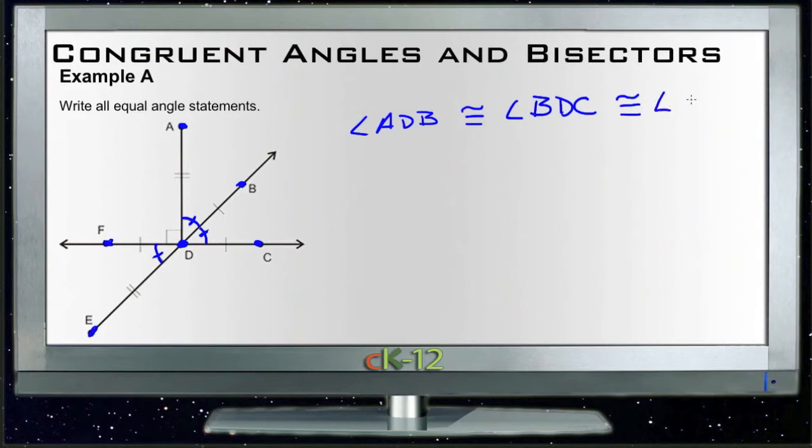Now you can also tell there's another rule we'll talk a little bit more about later, but we can also tell because FDE and BDC are across from each other, those are also called vertical angles. And there is another rule that says that vertical angles are equal, so we could also tell that those two are the same by recognizing that they were vertical angles.